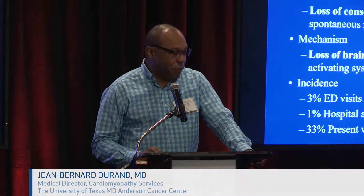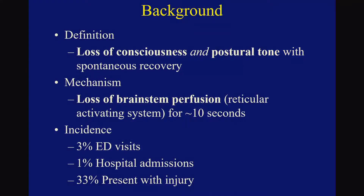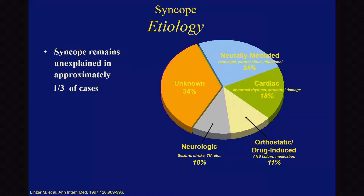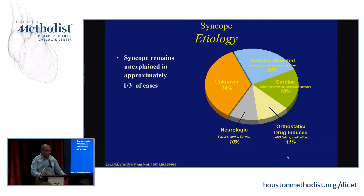The incidence makes up about 3% of ED visits, 1% of hospital admissions, and 33% can present with some sort of injury. When one looks at the etiology, about one-third are unknown, but the majority are usually neural-mediated at 24%, cardiac in origin about 20%, orthostatic 11%, and neurologic 10%.